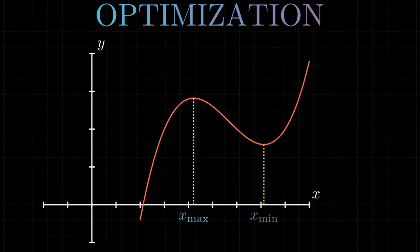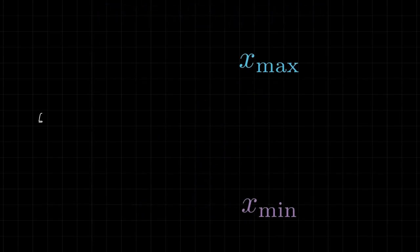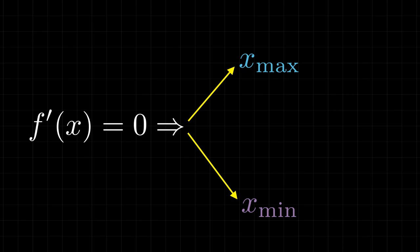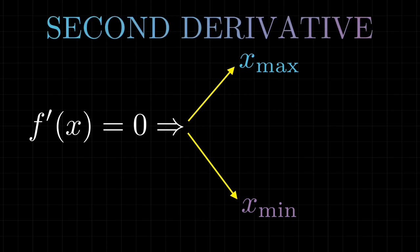There is, however, a problem. If we do not have the graph of the function to help us, when we solve the equation f prime of x equal to zero, how do we understand if the solutions found correspond to a maximum or a minimum of the function? To understand this, the second derivative will help us.